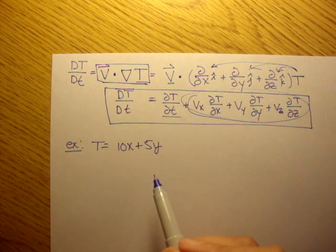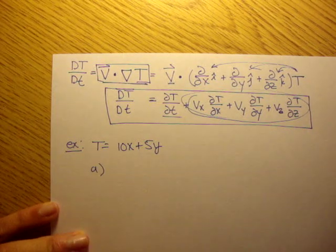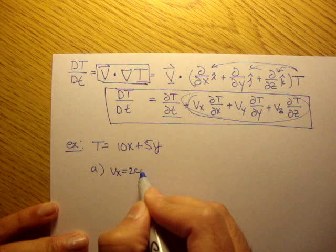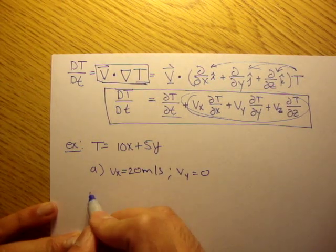Determine the time rate of change of temperature of a fluid particle traveling horizontally only at 20 meters per second. So in that case, Vy is going to be equal to 0, right? Just horizontally.